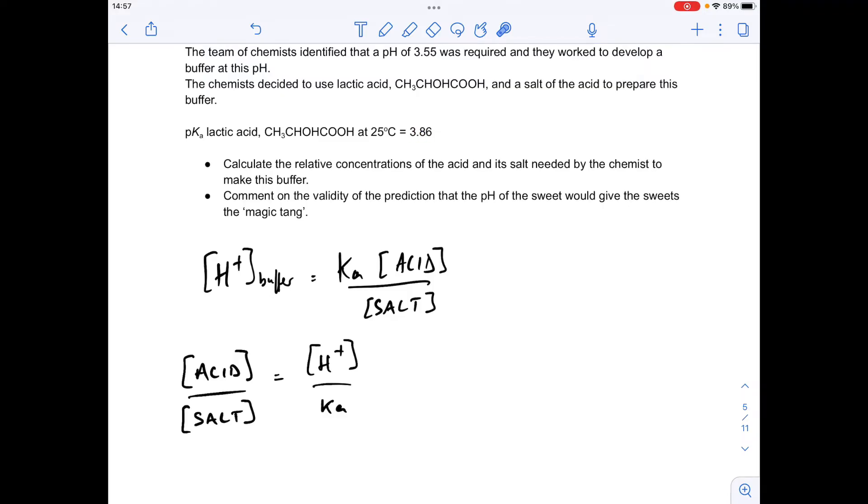So to calculate the H plus concentration from the pH, it's 10 to the minus pH. So 10 to the minus 3.55 divided by, to turn pKa into Ka, it's 10 to the minus pKa. So this would be 10 to the minus 3.86.